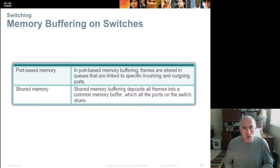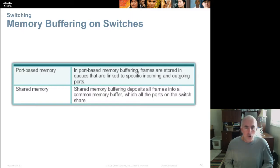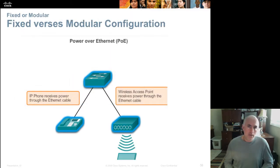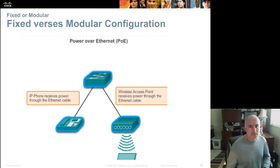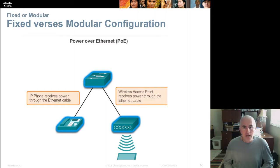Two types of memory are available on switches. Port-based memory has separate RAM chips on every single port for incoming and outgoing data. Shared memory uses one large memory area shared by all ports for all incoming and outgoing traffic.